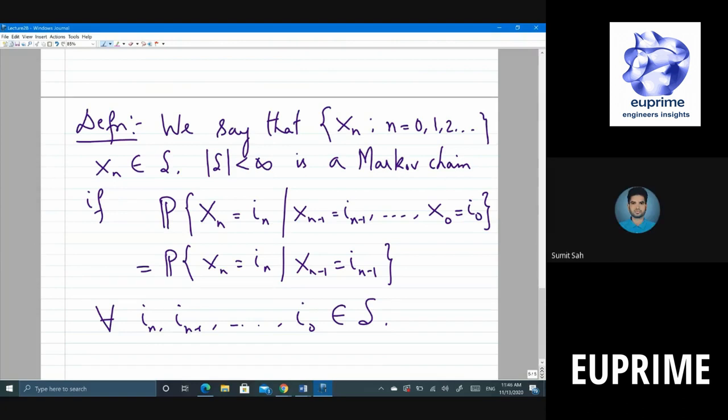Student asks: It only depends on the immediate previous situation? Professor: That's what we are trying to say. In this definition we are just saying that this process will be Markov chain if it only depends on the immediate previous state.